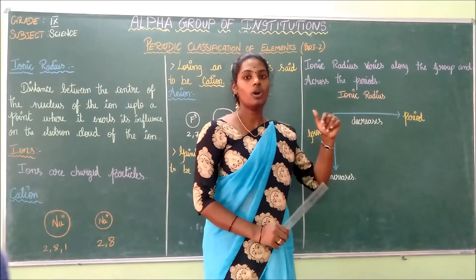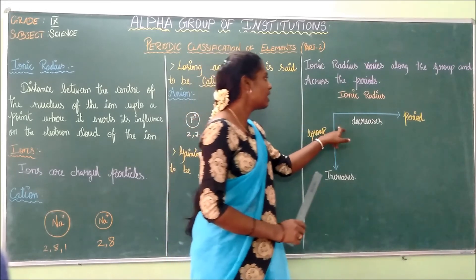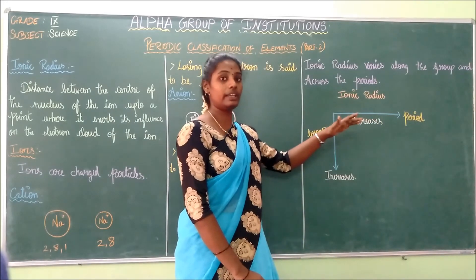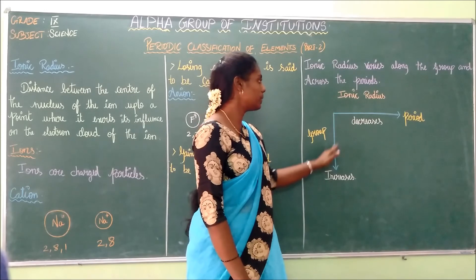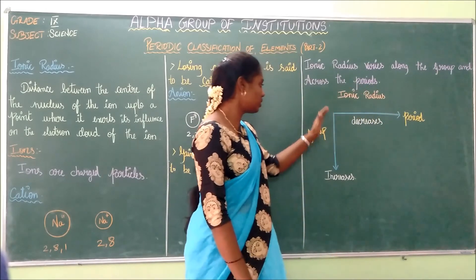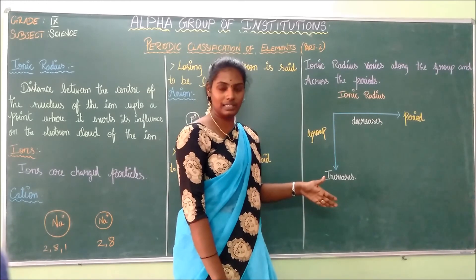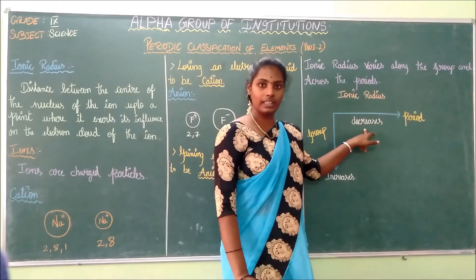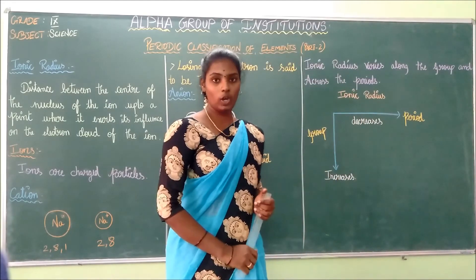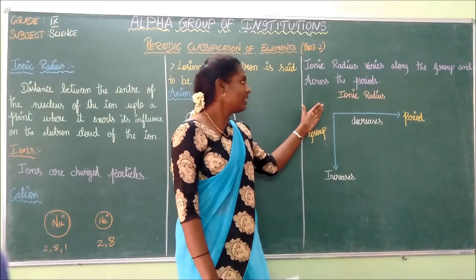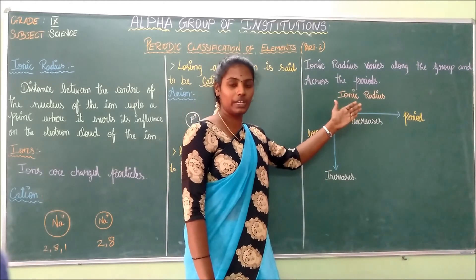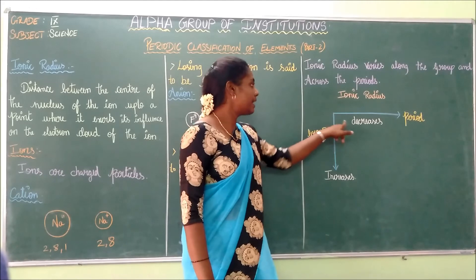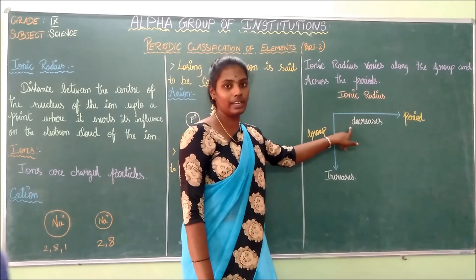Let us know how the ionic radius varies along the group and across the period. Along the group, the ionic radius increases. Across the period, the ionic radius decreases — similar to the trend seen for atomic radius.